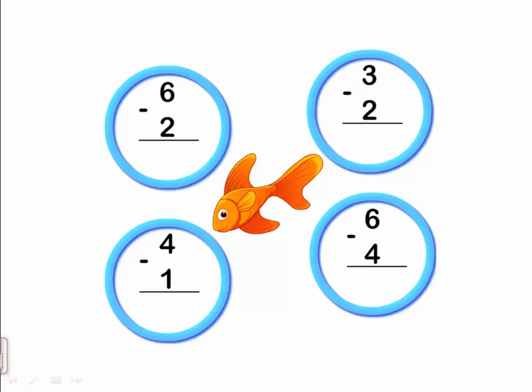The next one: three minus two. Which one is the smaller? The smaller number is two. We will count after two till three. After two: three. So it's one finger. Three minus two equals one.